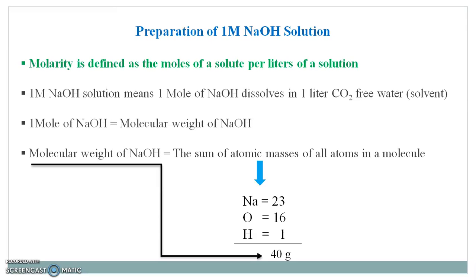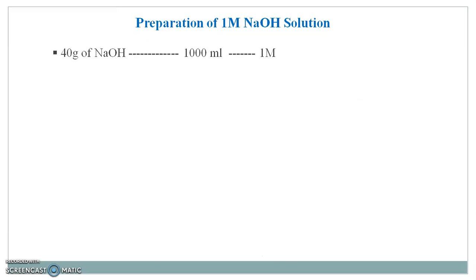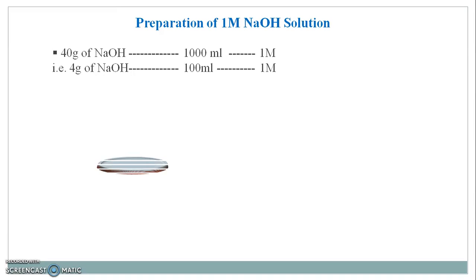So the molecular weight of sodium hydroxide is 40 grams. This means 40 grams of sodium hydroxide dissolved up to 1000 ml forms a solution having 1 molar concentration. That is, 4 grams of NaOH when dissolved in 100 ml gives a 1 molar solution. So this is the preparation procedure.